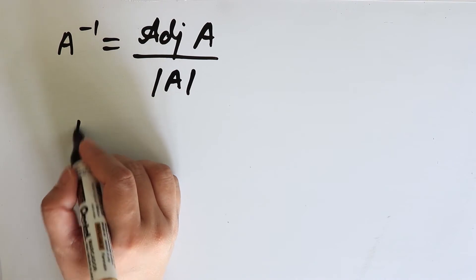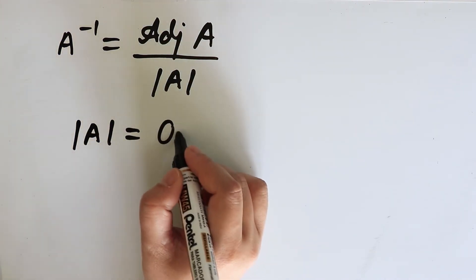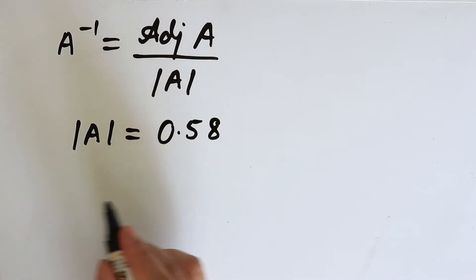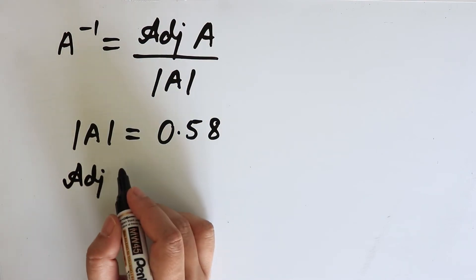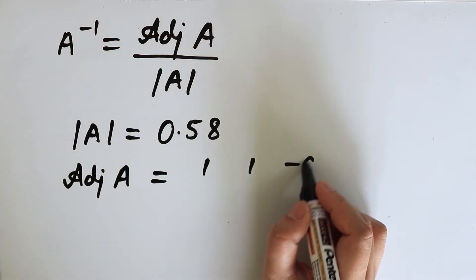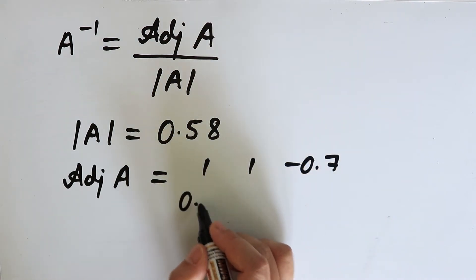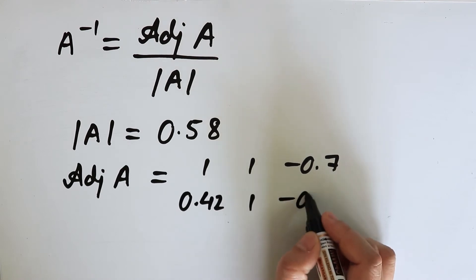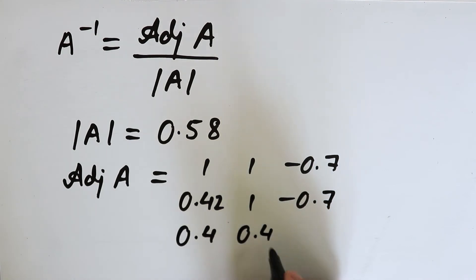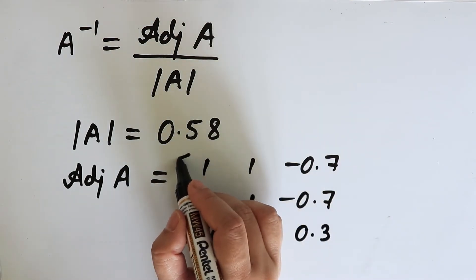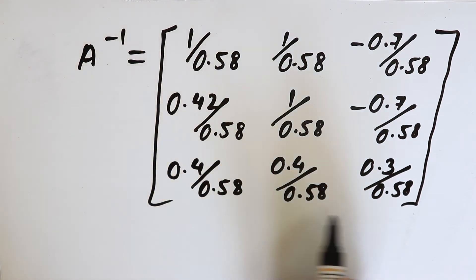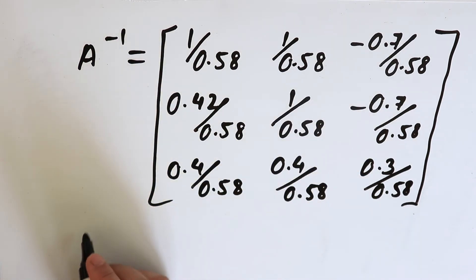The determinant of A equals 0.58 — you can calculate it by pausing the video and check the value. The adjoint matrix of A is given by: 1, 1, minus 0.7, 0.4, 1, minus 0.7, 0.4, 0.4, and 0.3. Therefore A inverse will be equal to this matrix, and we can find the value of X.